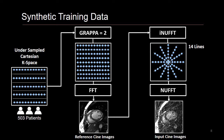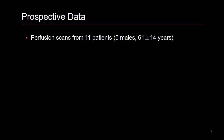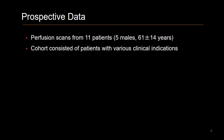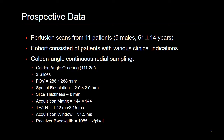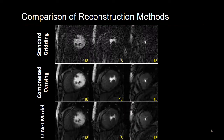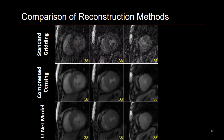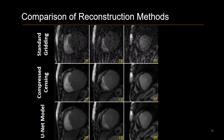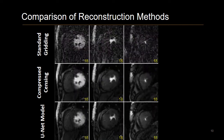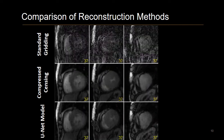Now that we have our training data, we can train our model. To evaluate the performance of our model, we collected perfusion scans from 11 patients. The cohort consisted of cardiac patients with various clinical indications. The acquisition sequence used golden angle continuous radial sampling. Here you can see the reconstruction for the standard gridding along with our compressed sensing reconstruction and the UNET model reconstruction.